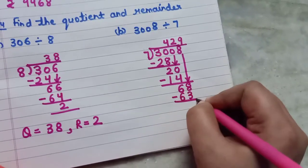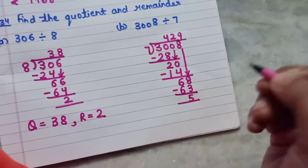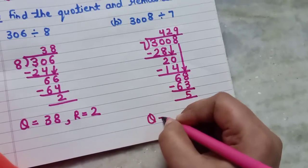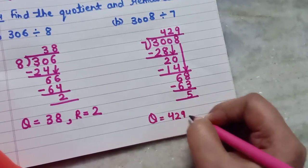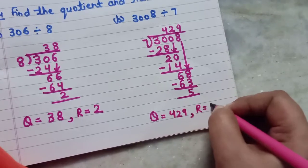Now subtract them. What will come? 8 minus 3 will be equal to 5. So hence your quotient is equal to 429 and your remainder is equal to 5.